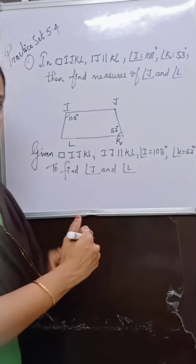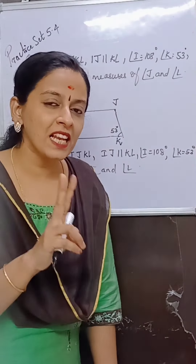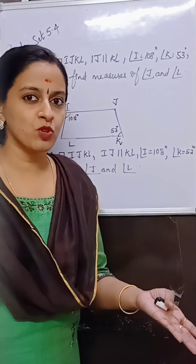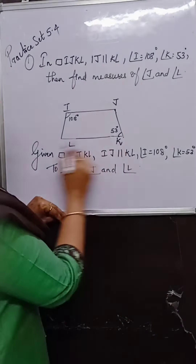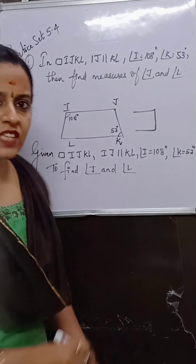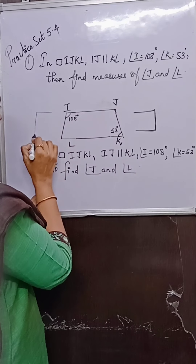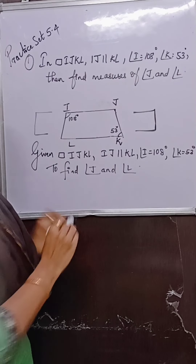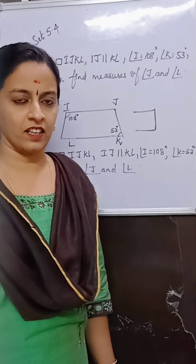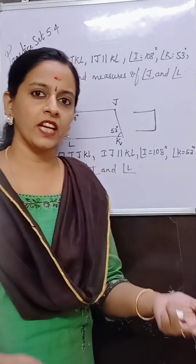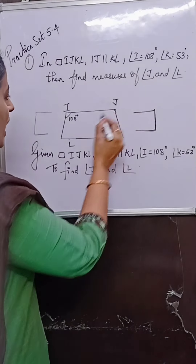Let us write the given details and move to the solution. Since IJ is parallel to KL, for two parallel lines with a transversal, co-interior angles (C-shaped) are supplementary. So angle I + angle L = 180°, and angle J + angle K = 180°. Interior angles are supplementary.